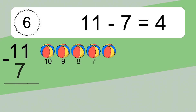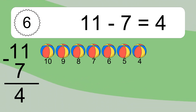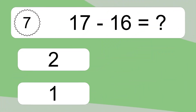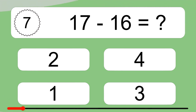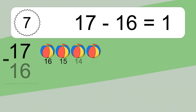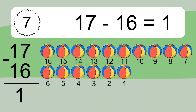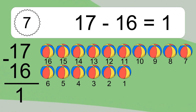11 minus 7 equals what? 11 minus 7 equals 4. Let's count it: 10, 9, 8, 7, 6, 5, 4. 17 minus 16 equals 1. Let's count it: 16, 15, 14, 13, 12, 11, 10, 9, 8, 7, 6, 5, 4, 3, 2, 1.